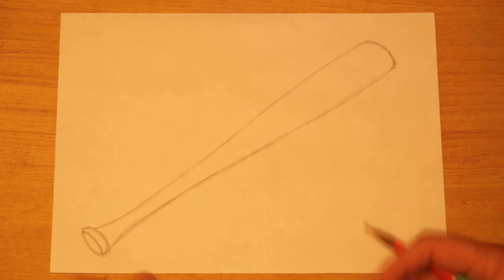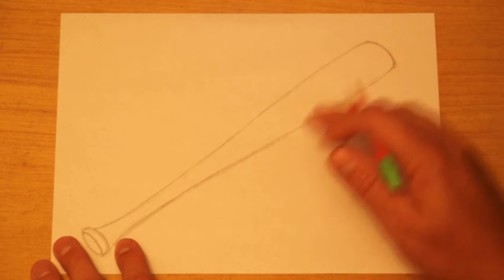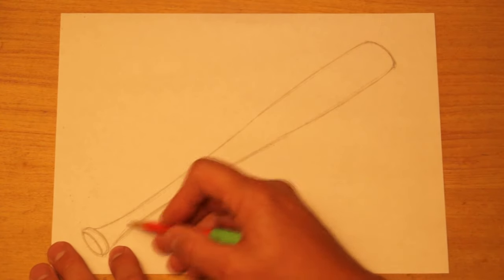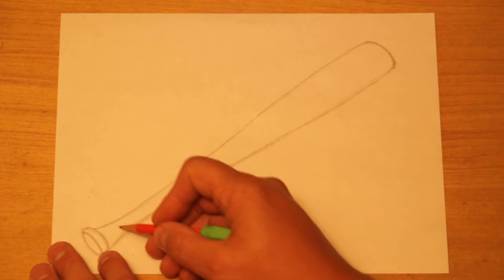Now, if you have a bat at home, this will be easier. If you don't, of course, you might be a harder thing to do. You might be able to find a picture of a bat on the internet. But what you want to do is look at your bat. Now, my bat does not have a grip on it. It's just a wooden bat.